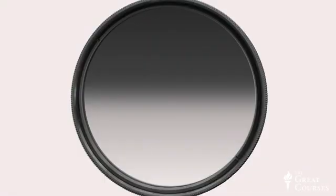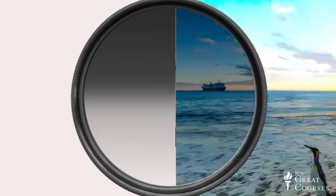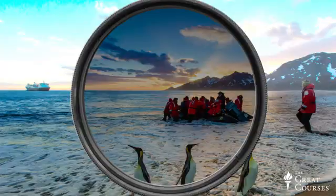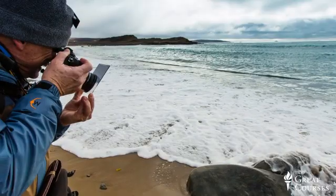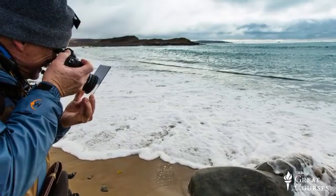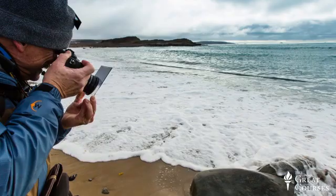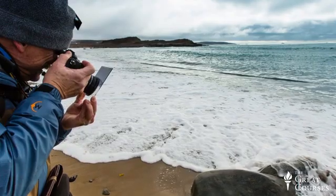These filters are half grey, half clear — we call them a graduated neutral density filter. They hold back the bright contrast, in this case of the sky or the water. You can also use them to slow the shutter speed down, so you can shoot motion blur shots using these neutral density filters as well.